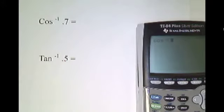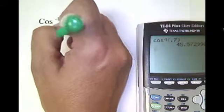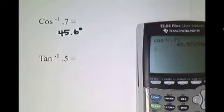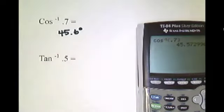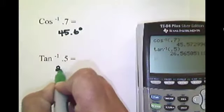Second cosine 0.7 is equal to 45.6 degrees. At 45.6 degrees, that angle will have a cosine of 0.7. The second tangent of 0.5 is 26.6 degrees.